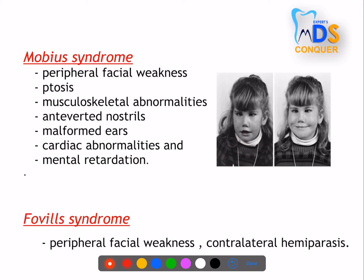Möbius syndrome shows peripheral weakness, ptosis of the eye, musculoskeletal abnormalities, malformed ears, cardiac abnormalities, and mental retardation. It presents as bilateral facial paralysis but is peripheral in nature.